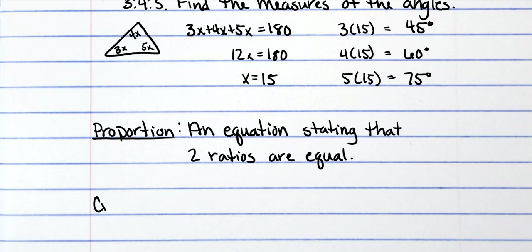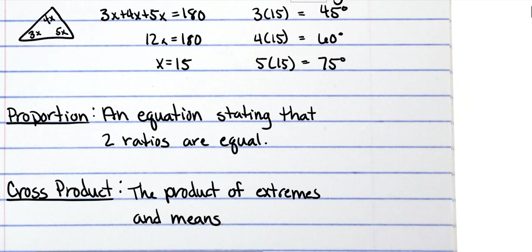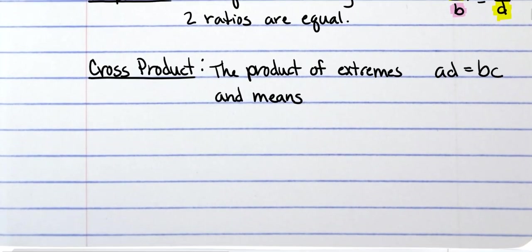And then we also have a thing called the cross product. The cross product is the product of the extremes and means. So a proportion is like a over b is equal to c over d. But the cross product, which is the product of means and extremes—these guys are my extremes, so I would multiply those together, and then these guys are my means and I would multiply those together. And that's how I get the cross product. So let's do some example problems.